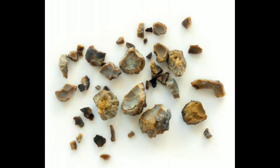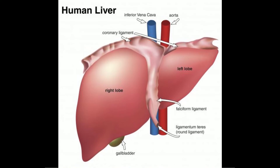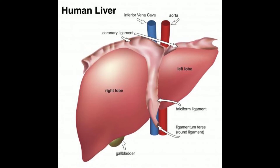Its catalytic action is due to the presence of two molybdenum atoms, eight iron atoms, and two flavin molecules. It contains the metals molybdenum, so xanthine oxidase is also classified under the group of metalloproteins.